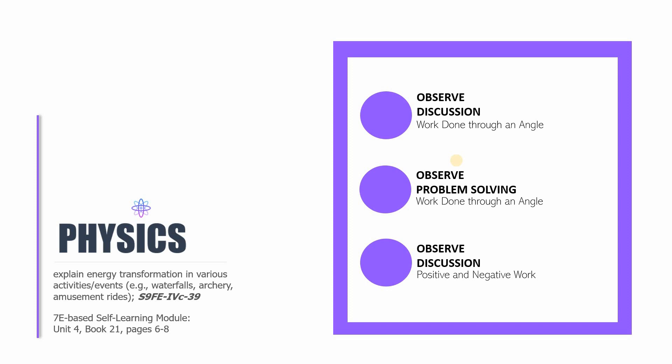You may not have noticed this but we were able to discuss what happens or what do we do when work is done through an angle and we even had a sample problem related to that. And we also concluded this video lesson discussing what it means to do positive or negative work. Remember that this 25th session is based on the 4th unit 21st book pages 6 to 8 of the 7E based self-learning module and the focus of this current video lesson is for you to be capable of explaining energy transformation in various activities or events such as waterfalls, archery, and amusement rides. This is SirCJ and I hope that I will see you in the next video lesson. Thank you for bearing with me. I'll see you next time.